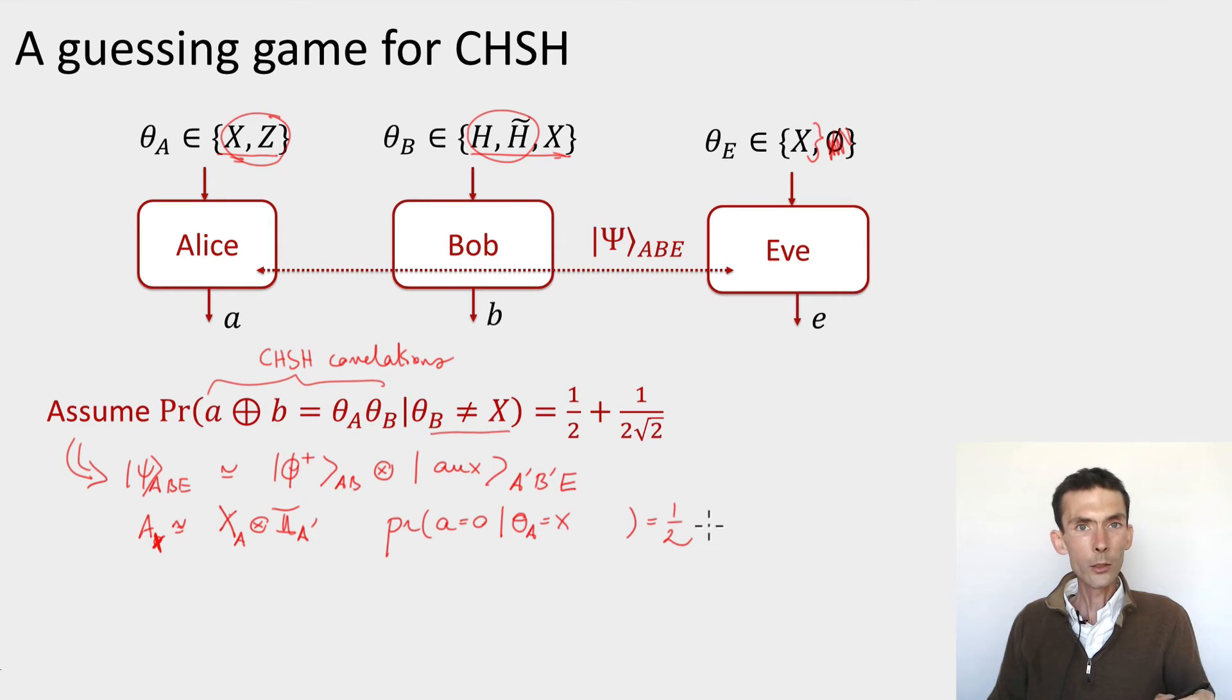Not only is it going to be uniformly distributed by itself, but because the state is a tensor product here, and the X operator is being performed on the Phi plus part of the state, which is uncorrelated with Eve, this means that I can add an E here, Eve's system, and it's still the case that, with respect from the point of view of Eve,